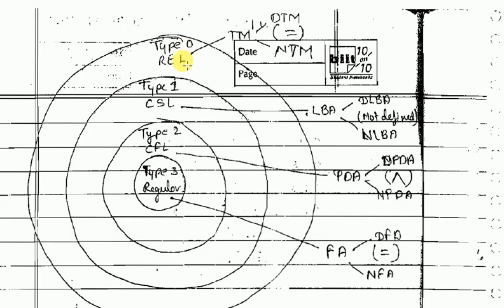For type 0, we use Turing machine. For type 1, we use linear bounded automata. For type 2, context-free language, we use pushdown automata. And for type 3, we use finite automata.